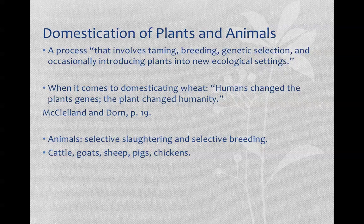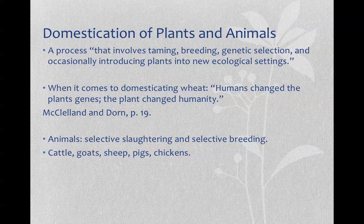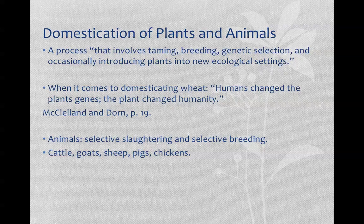These things are deliberately done — maybe sometimes by accident — but human beings are getting into the process of understanding the natural world and trying to get nature to do what they want it to do. When it comes to domesticating wheat, humans change the plant's genes, and then the plant changed humanity. This is a big theme throughout the history of science and technology — human beings crossing strains, interbreeding animals, trying to create new sorts of plants and animals that help in their domestication and settling processes. And in return, that domesticating activity changes human beings too, changing the way we live our daily lives. It's a symbiotic relationship.